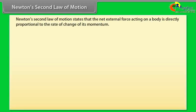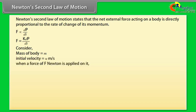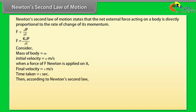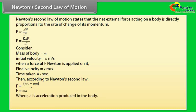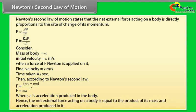Newton's second law of motion states that the net external force acting on a body is directly proportional to the rate of change of its momentum. Consider a body of mass M initially moving with velocity U m/s. When a force F (in Newtons) is applied, its velocity becomes V m/s after time T seconds. Then F = (mv − mu) / T = ma, where a is the acceleration produced. Hence the net external force equals the product of mass and acceleration.